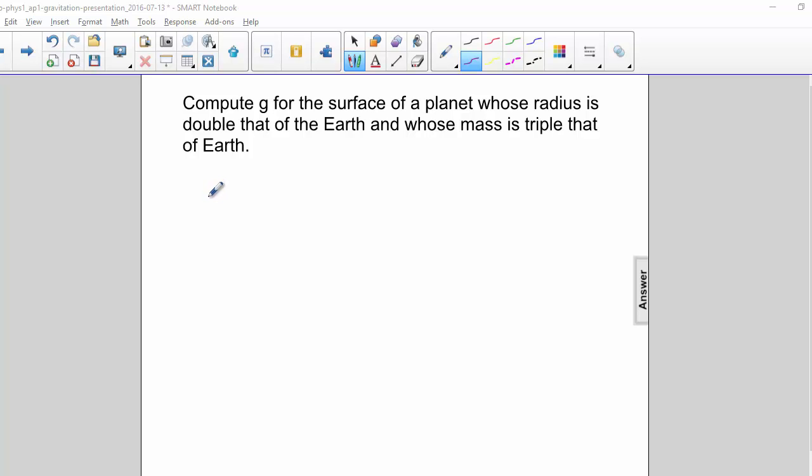Compute g for the surface of a planet whose radius is double that of the Earth and whose mass is triple that of the Earth. We know g equals GM over r squared.